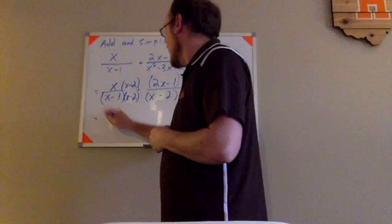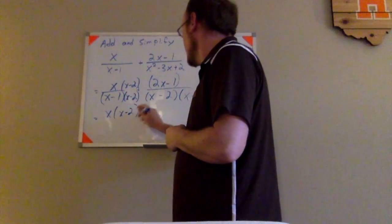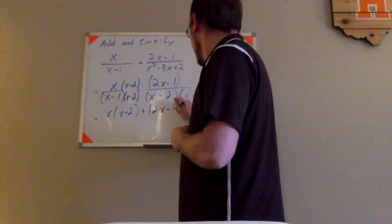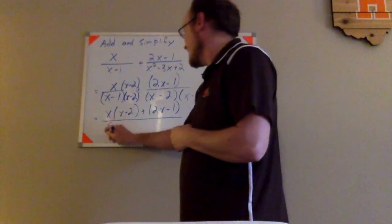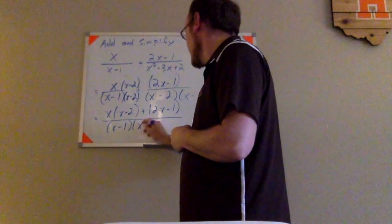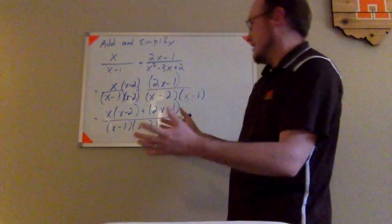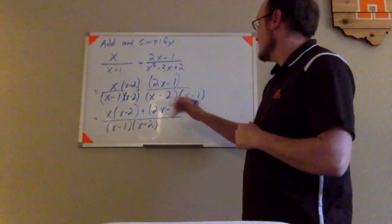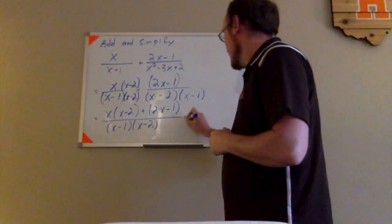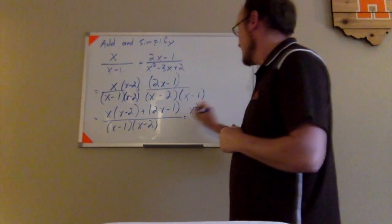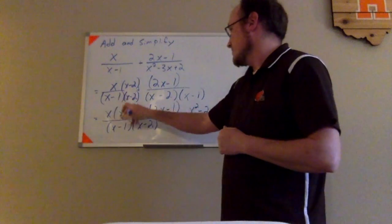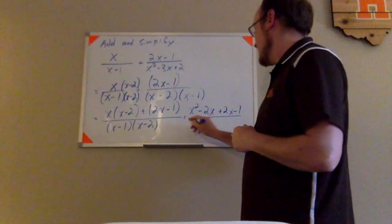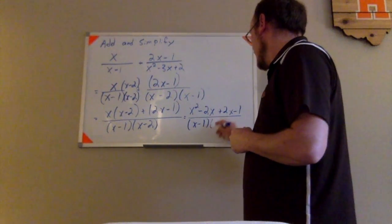So I have x times x minus 2 plus 2x minus 1, like that, all divided by x minus 1 and x minus 2. Now I have it written together as one fraction just over that denominator. At this point I can go ahead and distribute in my numerator. I can have x squared minus 2x, so I distribute here, and then plus 2x minus 1, all divided by x minus 1, x minus 2.